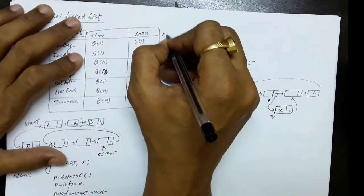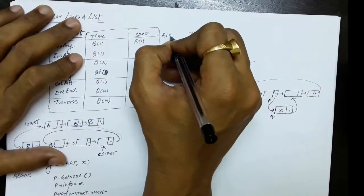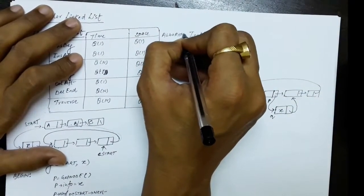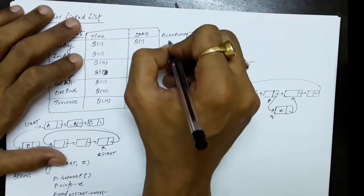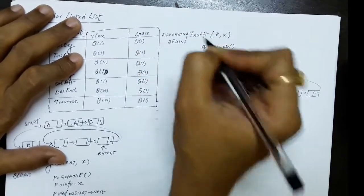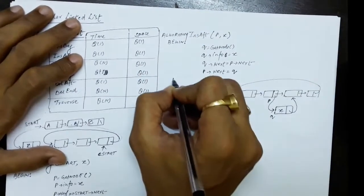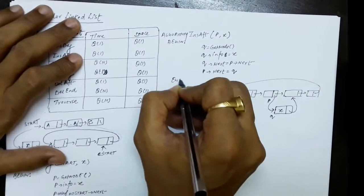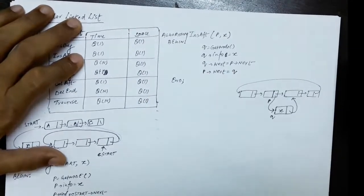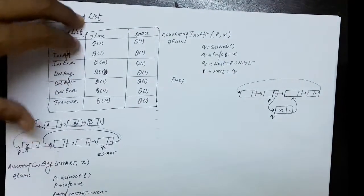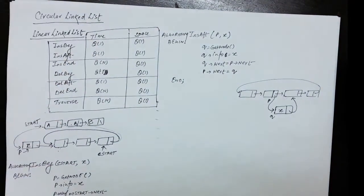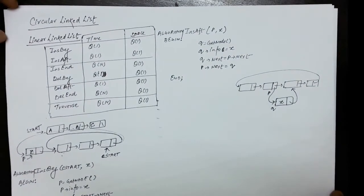I have not included exceptional conditions in the insert after function. I leave it as an assignment for you to find out what the exceptional conditions are. If you see, this is exactly the same as what we did in the linear linked list — there is no change.